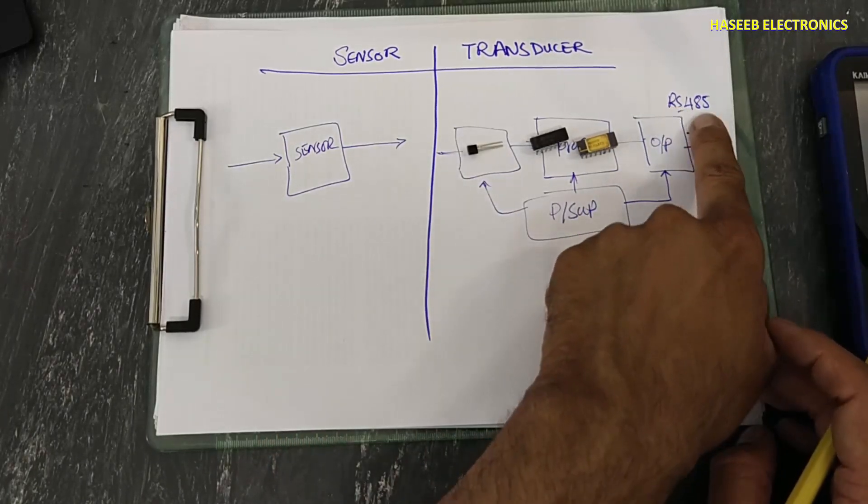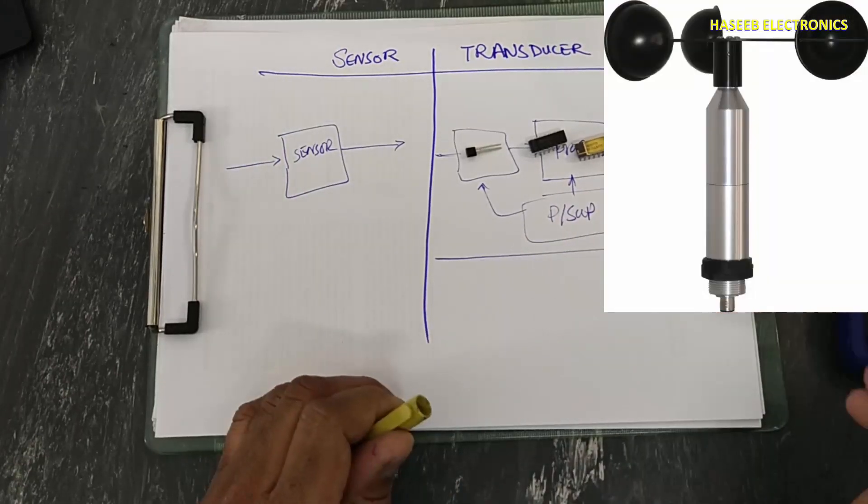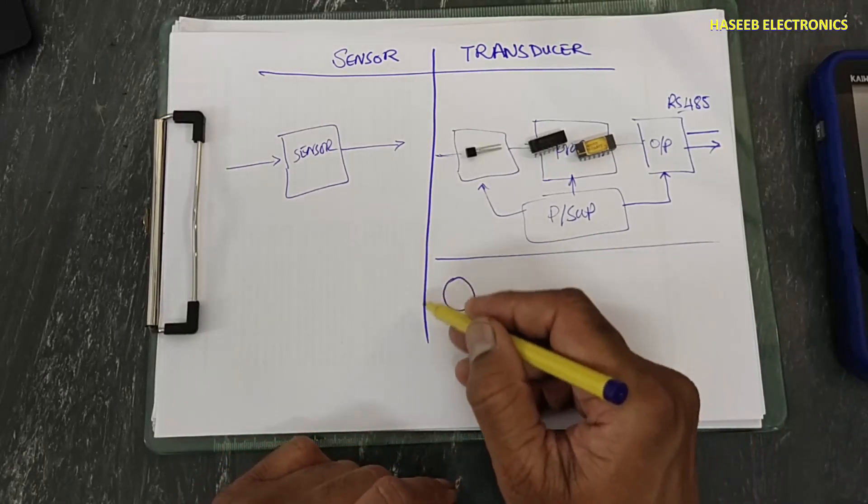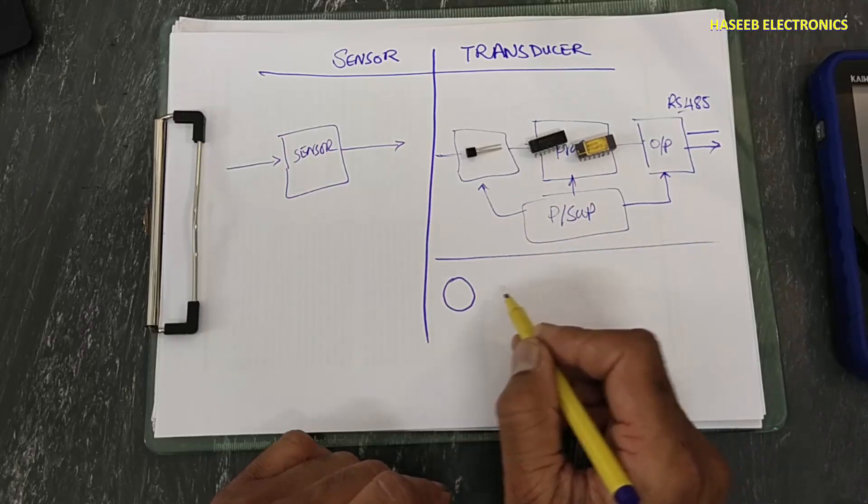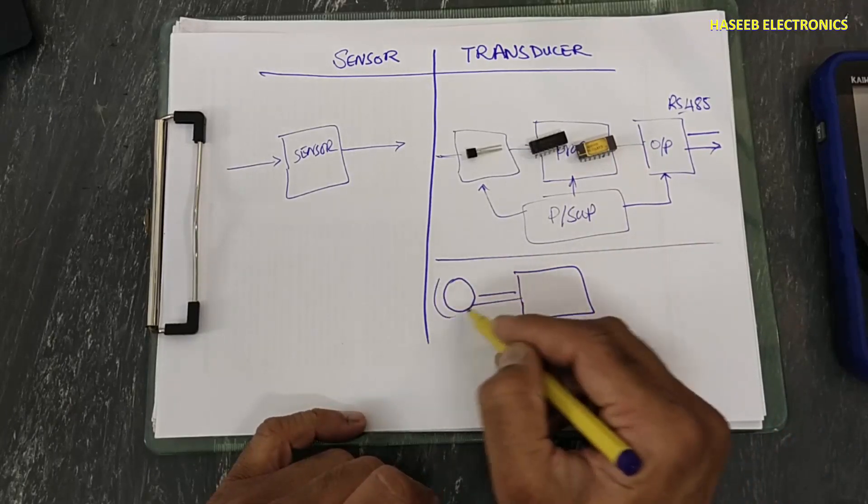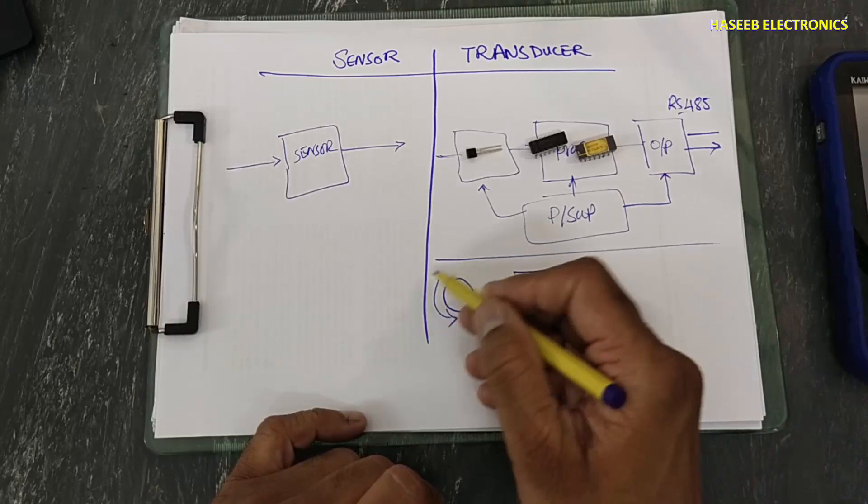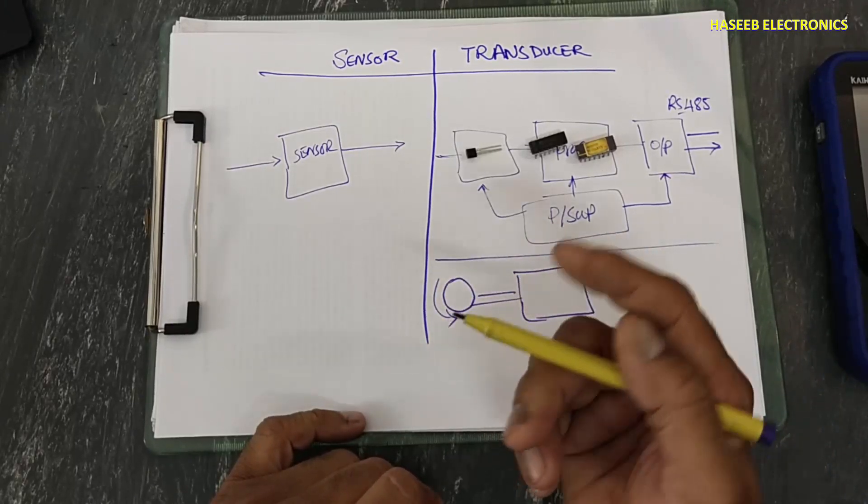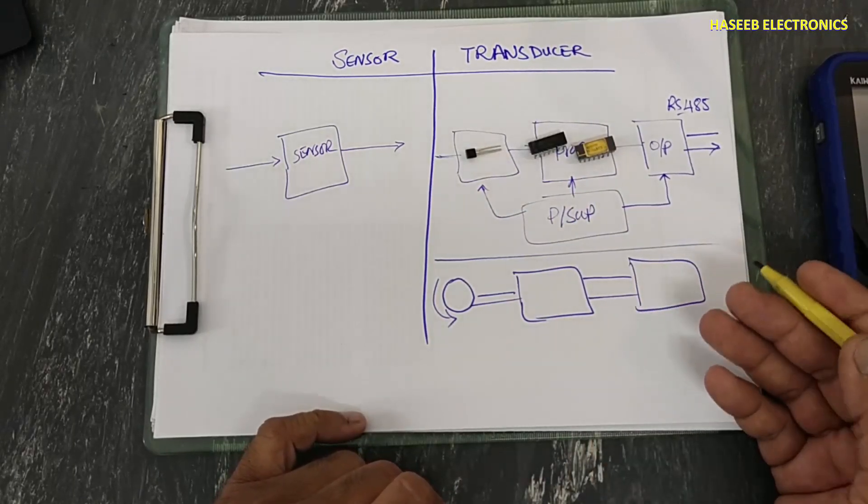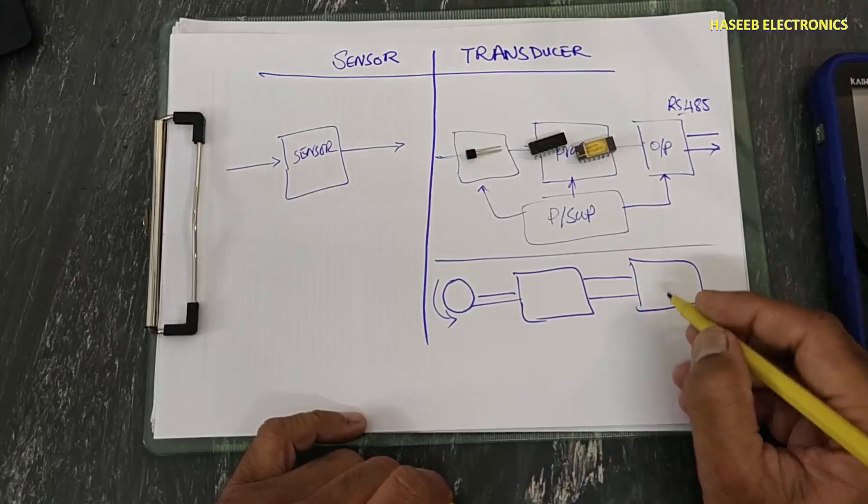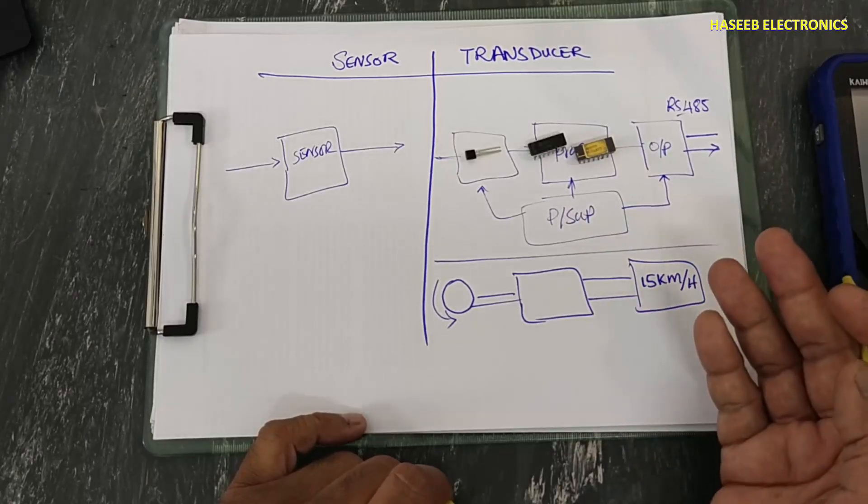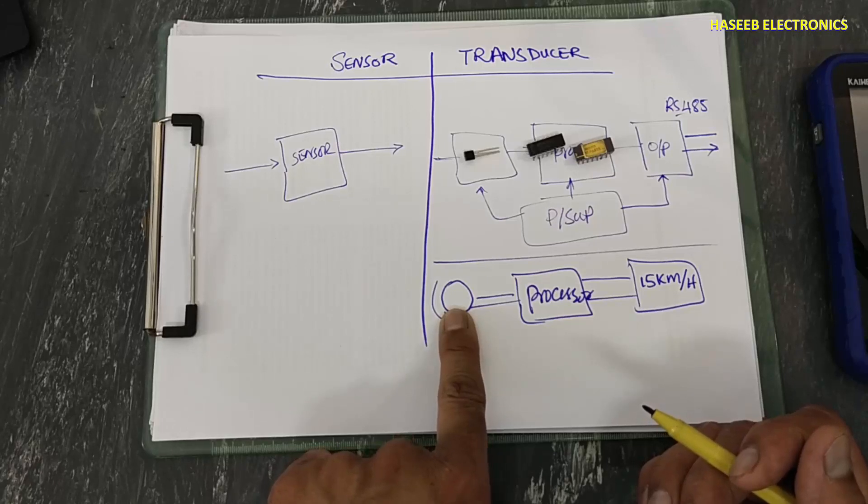Similarly, if we see meteorology sensor, we have generator here. It is revolving with the air speed, it produces some voltage, then we process this voltage through processor. It will sense the rotation - left, right, how much speed. Its generator will rotate with that speed, then this signal is going to any display. It will provide us 15 kilometer per hour and air direction. Here it was just only air speed sensor or direction sensor.